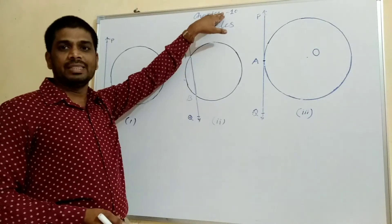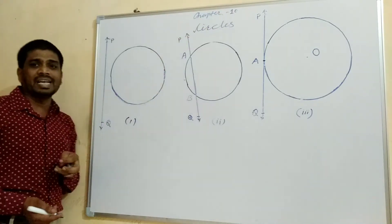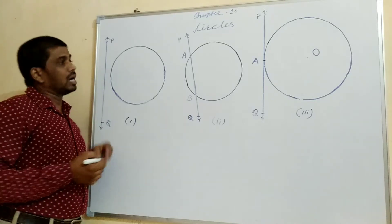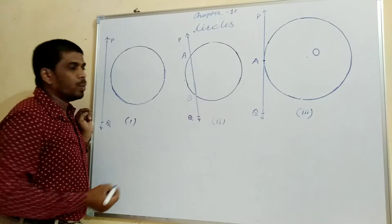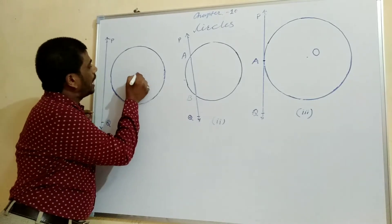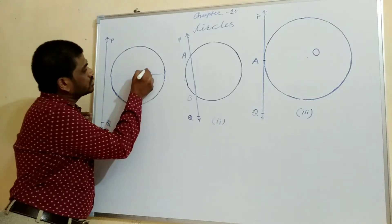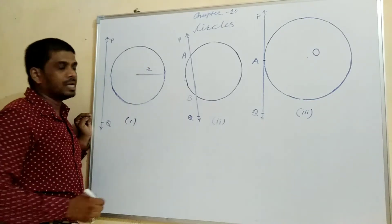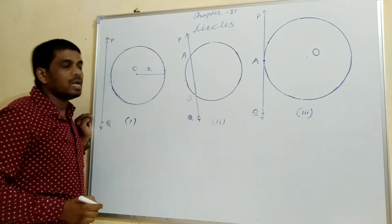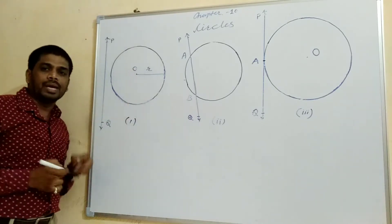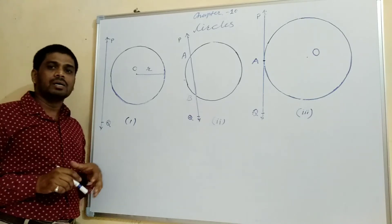Let us learn the new chapter 10, Circles. You have studied in 9th class that the circle is the collection of all the points which are at a constant distance from a fixed point. That constant distance is called the radius and the fixed point is called the center of a circle, and double of the radius will be the diameter. Let us draw the circle and the line.